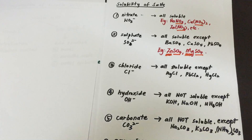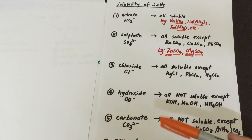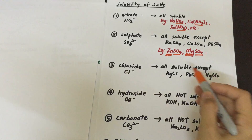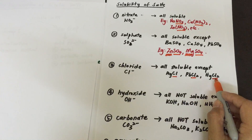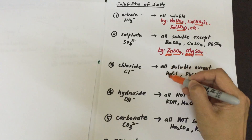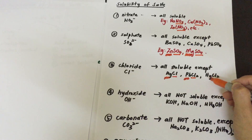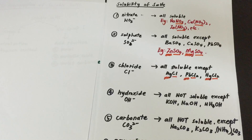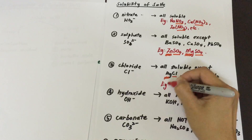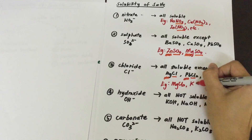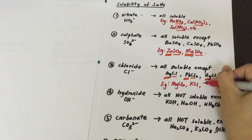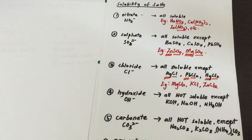For the chloride group, all chloride salts are soluble except silver chloride, lead(II) chloride, and mercury(II) chloride, which are insoluble. Therefore, other chloride salts such as magnesium chloride, potassium chloride, and zinc chloride are all soluble.